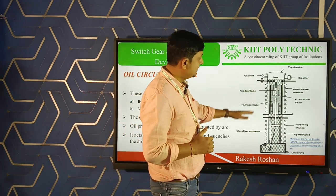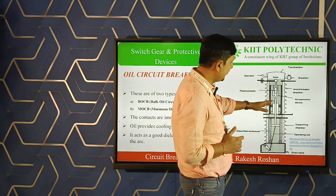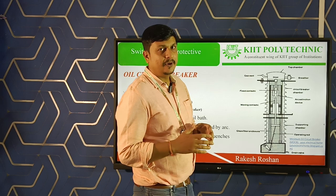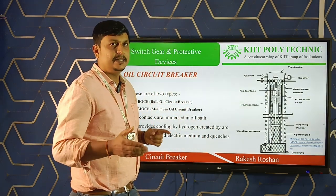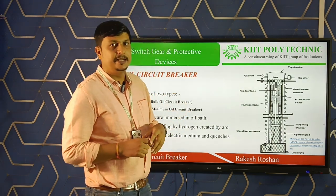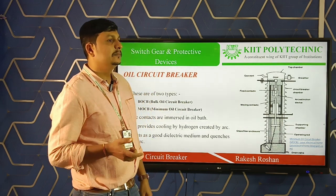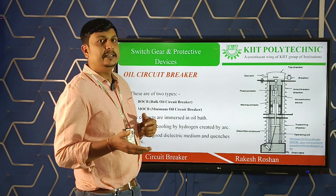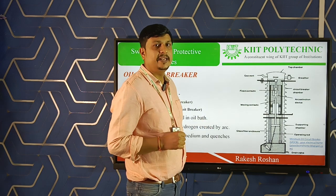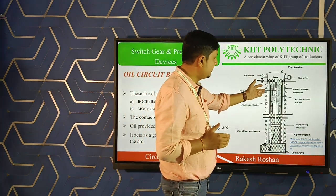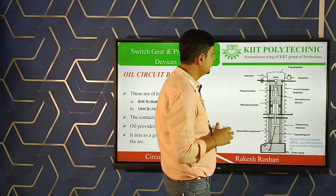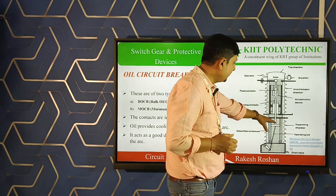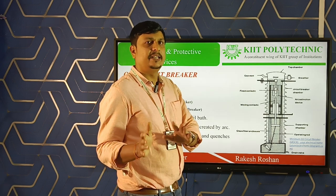In the circuit breaking chamber, there are two major components — fixed contact and moving contact — and a turbulator is also present. Whenever a fault occurs, the moving contact gets separated from the fixed contact and an arc is produced between them. The arc heats the surrounding oil, which decomposes into hydrogen gas. Hydrogen has excellent cooling properties, and the turbulator creates turbulence of hydrogen bubbles which extinguishes the arc very effectively. The supporting chamber also contains oil, which serves only as an insulating medium.